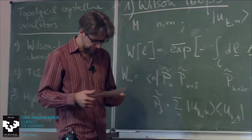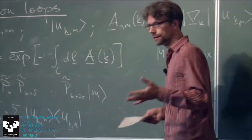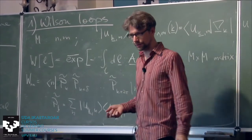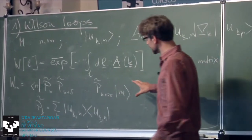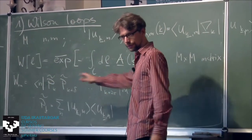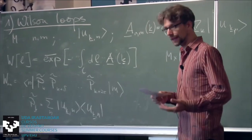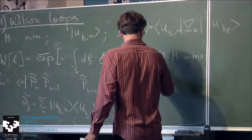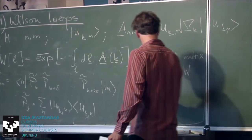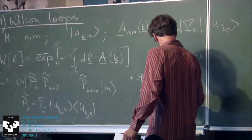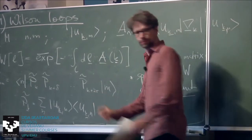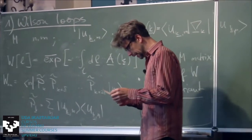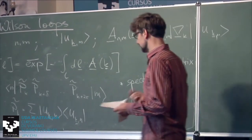This quantity is not gauge invariant — if you change the basis with this non-Abelian construction, it's gauge covariant and changes by the gauge transformation applied to the outer part. But what is important is that the spectrum of W is gauge invariant. So we can think of the spectrum as something that contains physical information about the system.